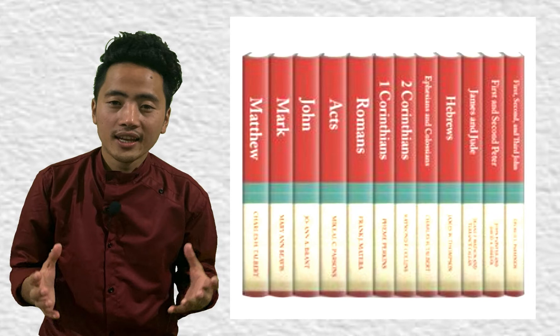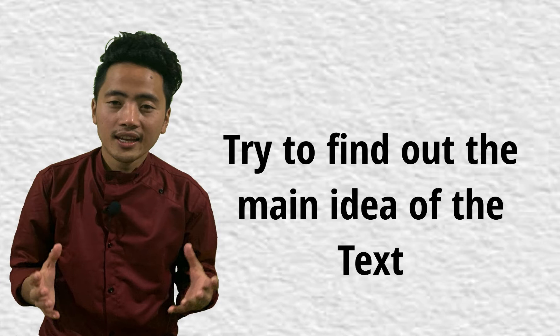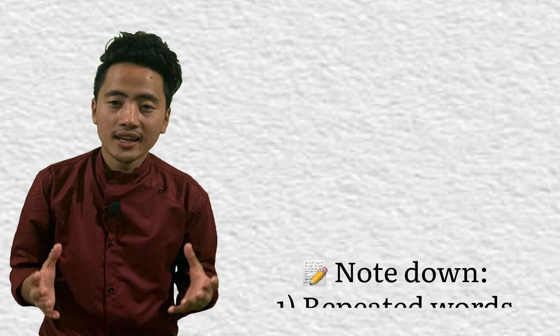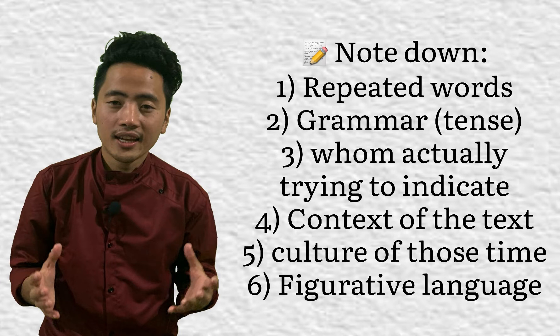You should refer to different commentaries and understand what the concept and idea of the text is actually talking about. While reading the text over and over again, you can note down the words which have been continuously repeated. Also, you can note down the grammatical part of that particular text — in which tense it has been written. Is it written in past tense or future tense? What is this text talking about — is it talking about the future or the past? What is actually happening in that particular text?